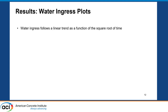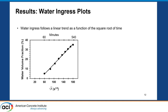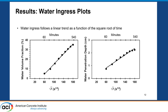I also tried to quantify the water movement by using the water volumes and plotting them as a function of the square root of time. That shows that water was moving following a linear trend, as we expect in unsaturated flow. A plot of the water penetration depth shows that within nine hours, the water penetrated about two and a quarter centimeters into the sample.